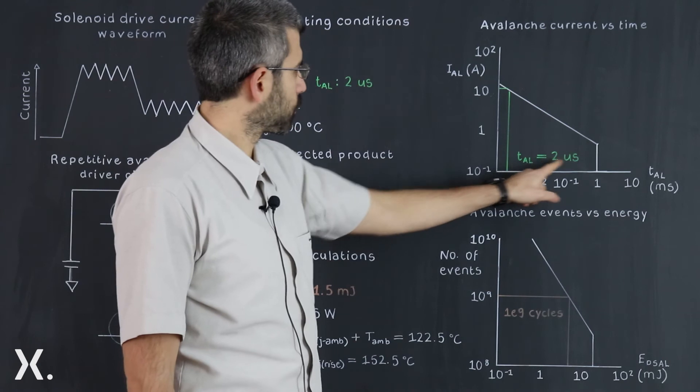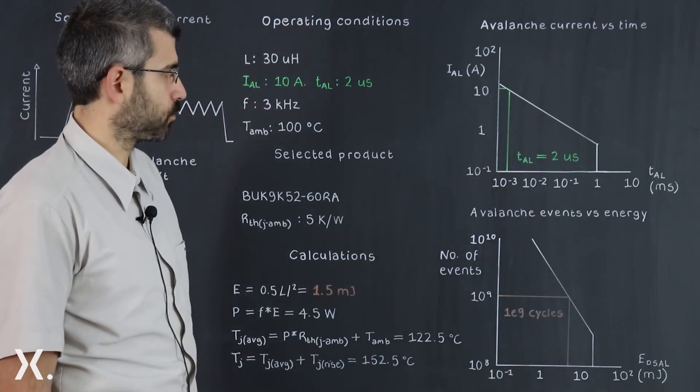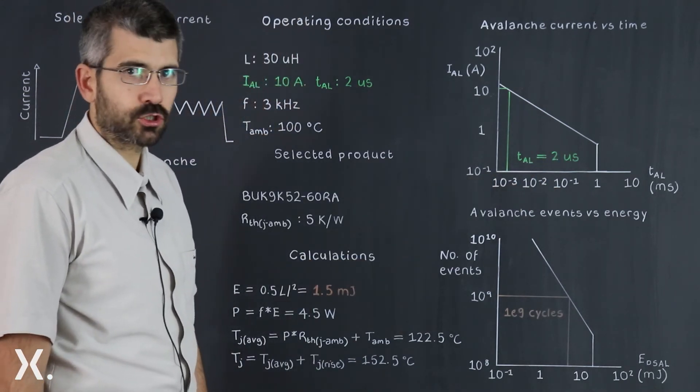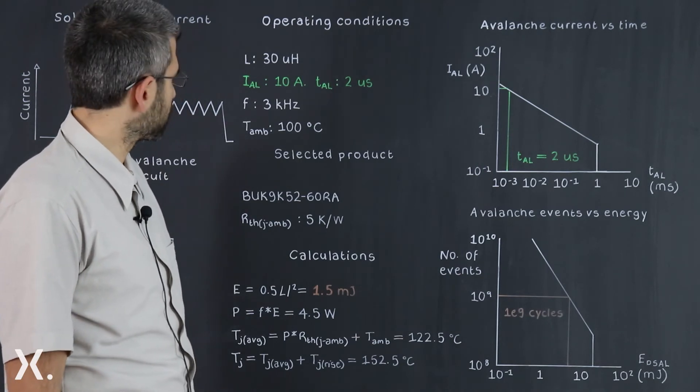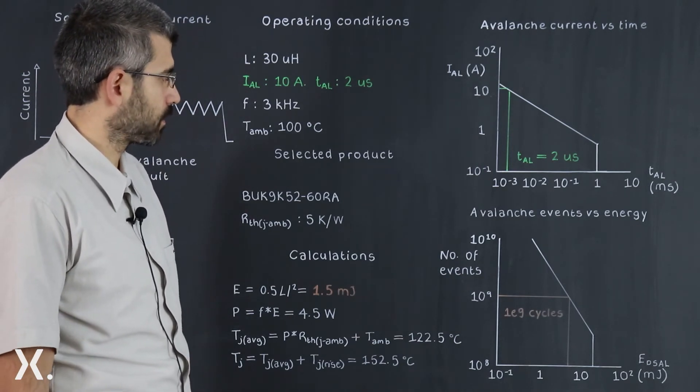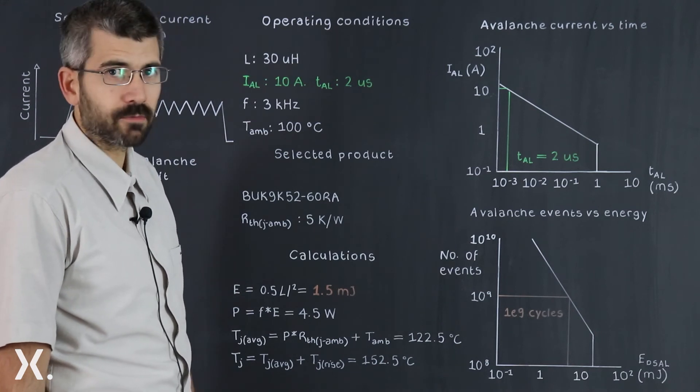We can see that we come to a maximum avalanche time of about 2 microseconds. This is short and we can always upgrade our MOSFET, but we also need to keep in mind that the current decay will be quite fast.